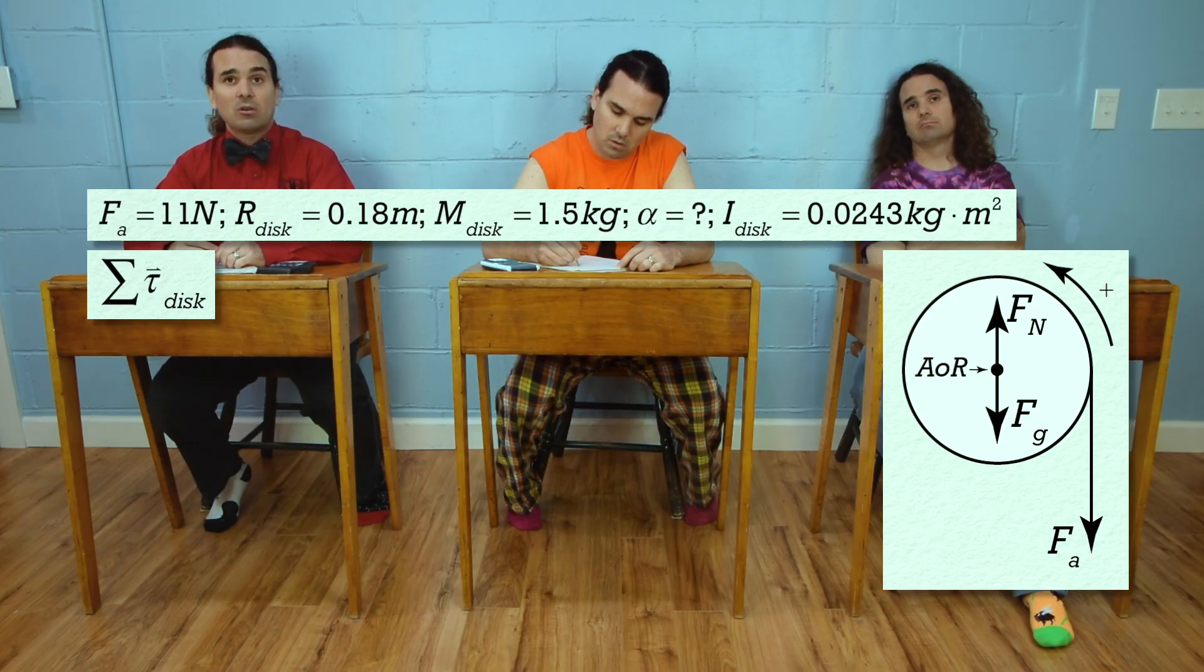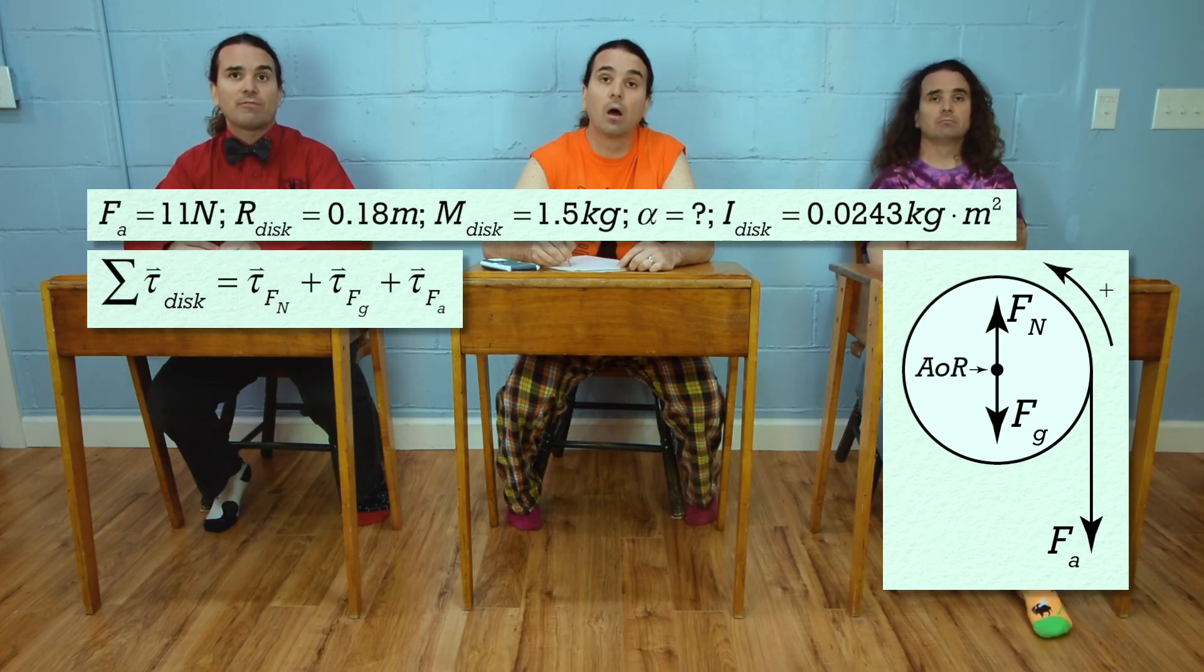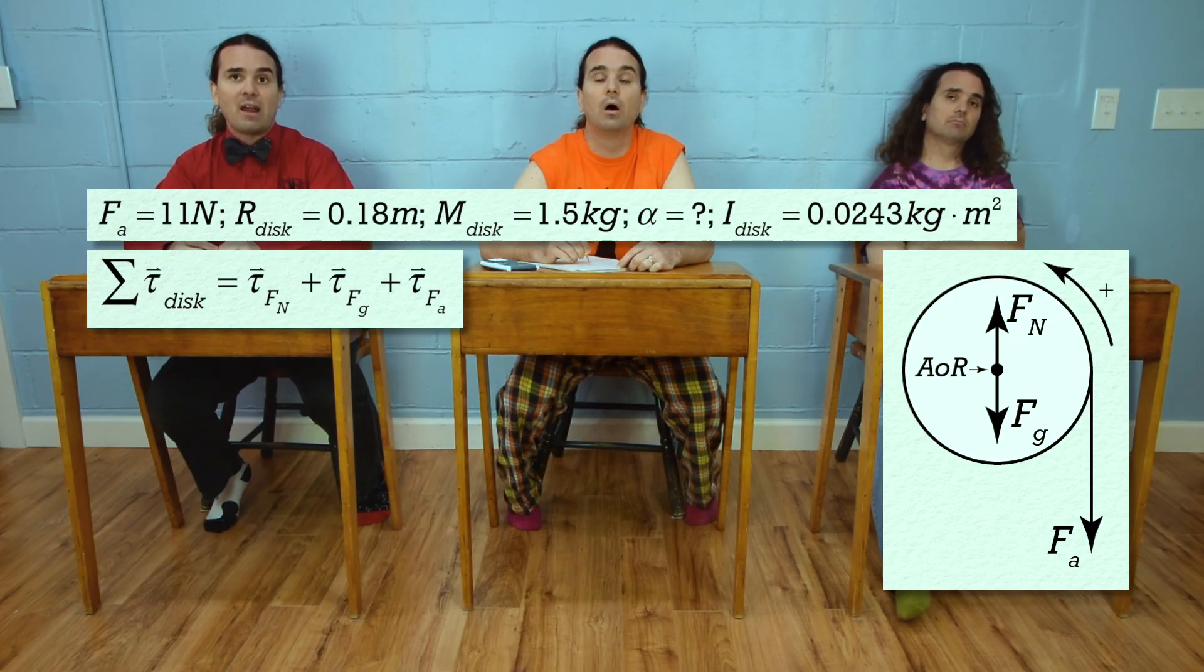That means the net torque equals the torque due to the force normal plus the torque due to the force of gravity plus the torque due to the force applied.